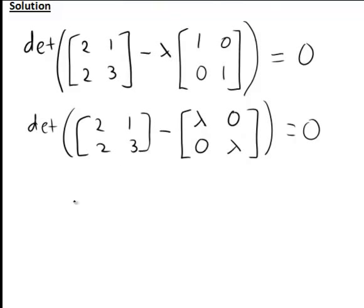Furthermore, when we subtract one matrix from another, we subtract the corresponding elements in each case. The first row, first column element will be 2 - λ. The first row,